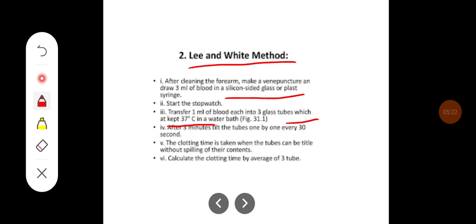After 3 minutes, tilt the tubes once every 30 seconds. The clotting time is taken when the tubes can be tilted without spilling their contents. Calculate the clotting time by averaging these 3 tubes.